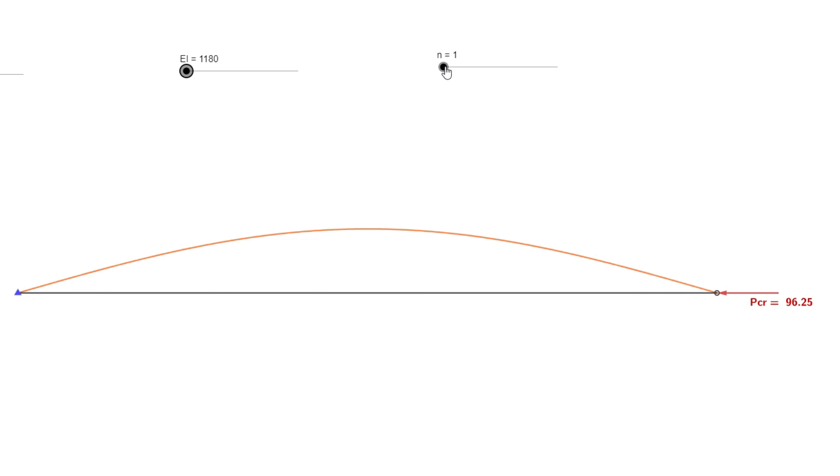Let us investigate how the deflected shape changes when changing specific parameters of the beam. When the length of the beam increases, the critical load decreases. However, if the bending resistance EI increases, then P critical will also increase.